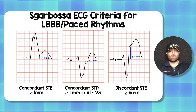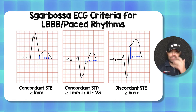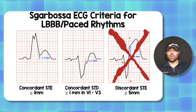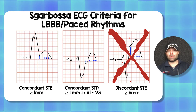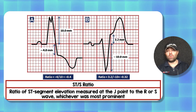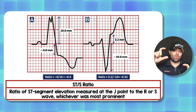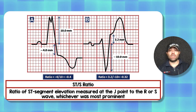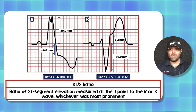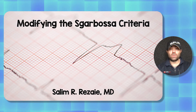So there you go — the original Sgarbossa criteria for left bundle branch block and paced rhythms is not something we should be using anymore. The evidence has been out since 2012, with validation in 2015, yet people are still talking about the original criteria. What we should be doing is replacing that third component with the ST to S amplitude ratio. If we are less than 25%, it is highly unlikely to be an occlusion myocardial infarction; if we are greater than 25%, it is highly likely. Would love to hear your thoughts, comments, and questions — thank you for tuning in.